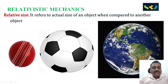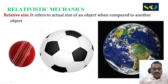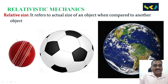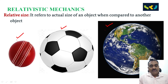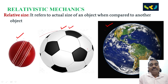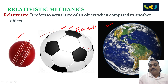For example, if we compare a football with an atom, the football is extremely big. But if compared with the Earth, the football is extremely small. You can see here: this is a cricket ball, this is the football, and this is the Earth. Compared to the football, the Earth is very big.